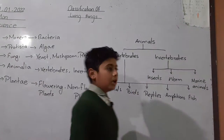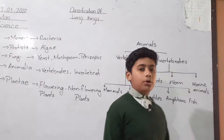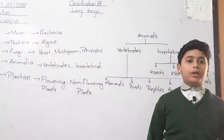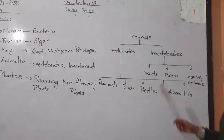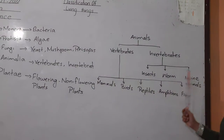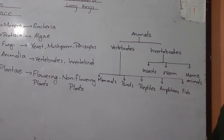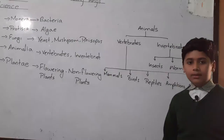Invertebrates — there are many types of invertebrates. I am telling you about three groups of invertebrates: Insects, Worms, and Marine Invertebrates.